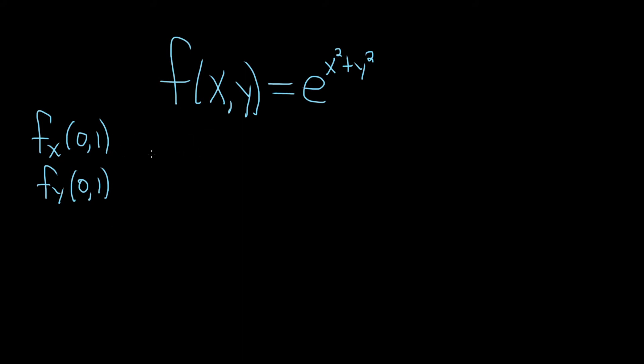Let's go ahead and start by finding the partial with respect to x, so fx. When we're looking for the partial derivative with respect to x, we treat all of the other variables as constants. So the y here is a constant, but we still have an x up here, so this is still a function of x as well. So we do have to differentiate this. It's not constant.